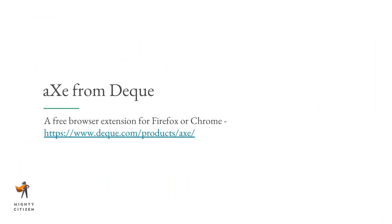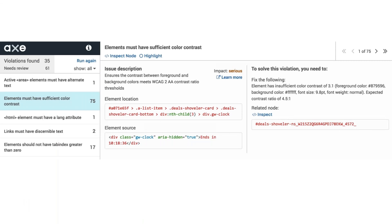The last tool is Axe from Deque — a free browser extension you can install for Firefox or Chrome. You navigate to any page, run the extension, and it gives you a report for that page. It found 35 violations on the test page and gives a description of each. You can also inspect the element directly in the code to see what the issue is.